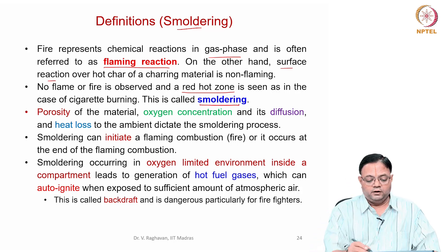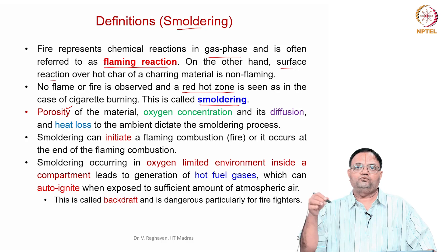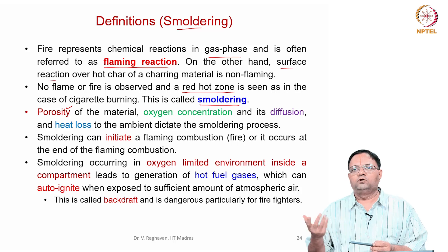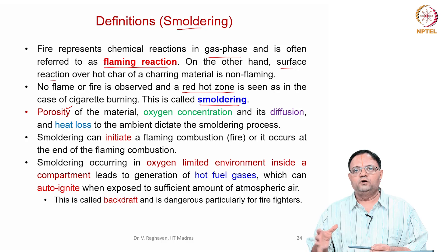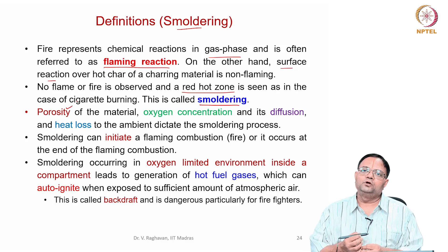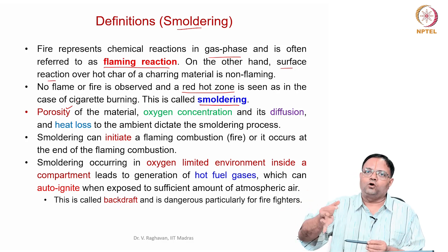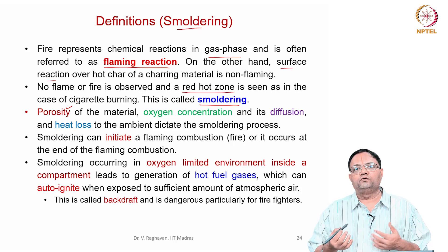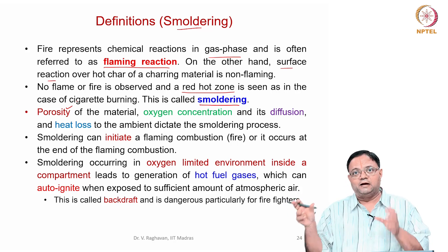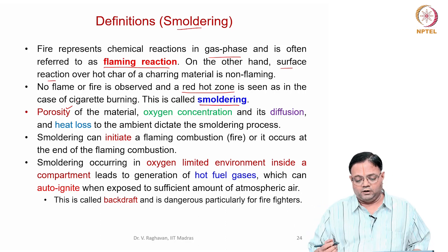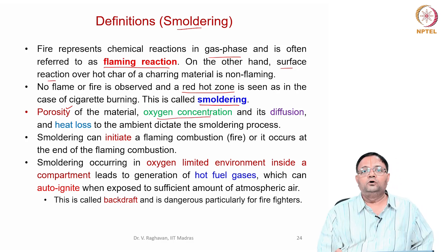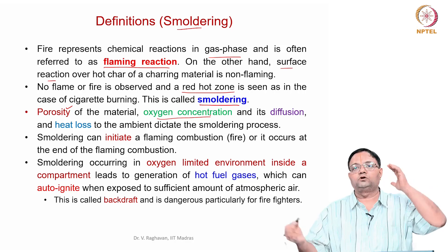What are the factors which dictate smoldering? First is the porosity of the material, because oxygen has to penetrate. If you pack it too dense then it will not be able to sustain smoldering. Even in a cigarette, if you pack the tobacco very densely then it is not easy for it to propagate — you suck the air so that air comes to the surface and burns the tobacco, but if the packing is very dense you cannot even suck air from the other side. So porosity of the material is very important, then comes oxygen concentration — there should be a good amount of oxygen in the environment to come to the surface.